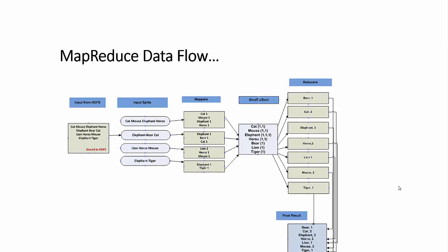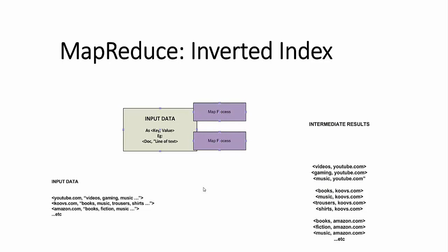Let's look at another example of inverted index. This process is used in many search engines to develop the index used when we do searches on the internet. The input data typically consists of the address of the web page followed by the list of words. All the words will appear on that web page as shown on the left of this image.